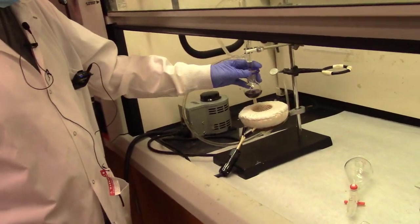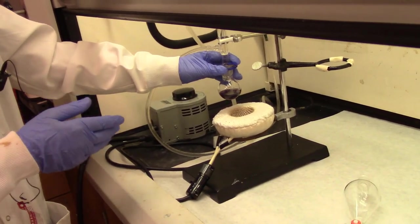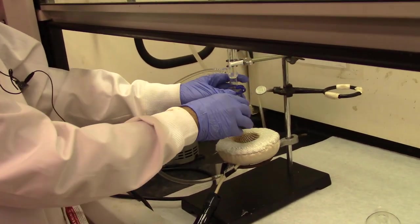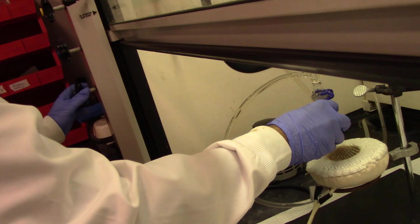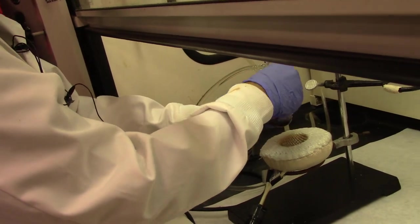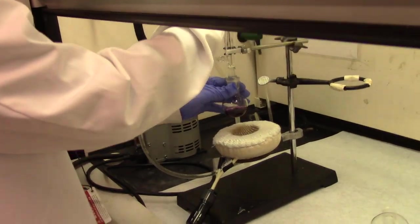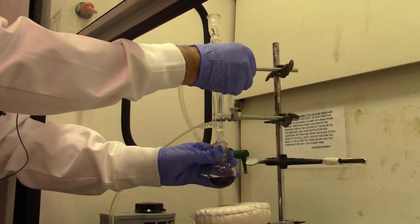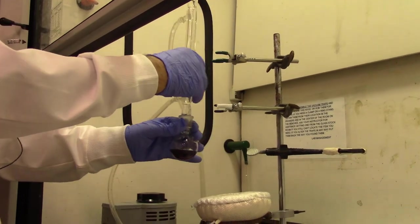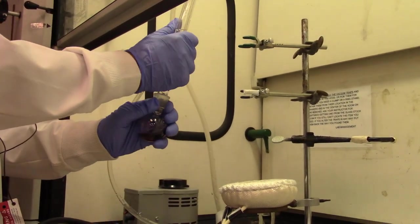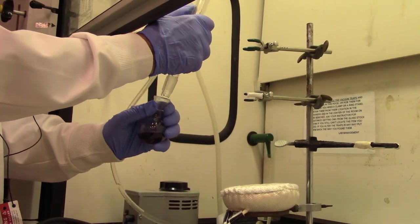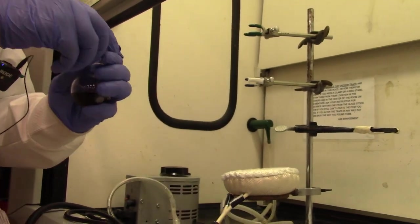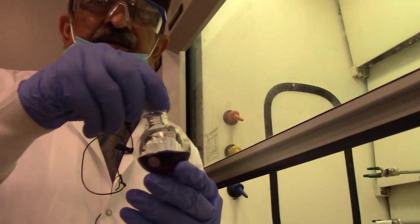Now our reaction is complete. We have been refluxing it for 45 minutes. It has attained darker color. Sometimes you don't get color, but other times you get color. It doesn't really matter. Color should not matter to you. So we should remove the Keck clamp and disassemble from top to bottom. Remove the condenser, water condenser. Disconnect it. Make sure you twist it a little bit. Be careful, it has sulfuric acid and acetic acid. Those are dangerous chemicals. So make sure you use gloves when you are detaching it.